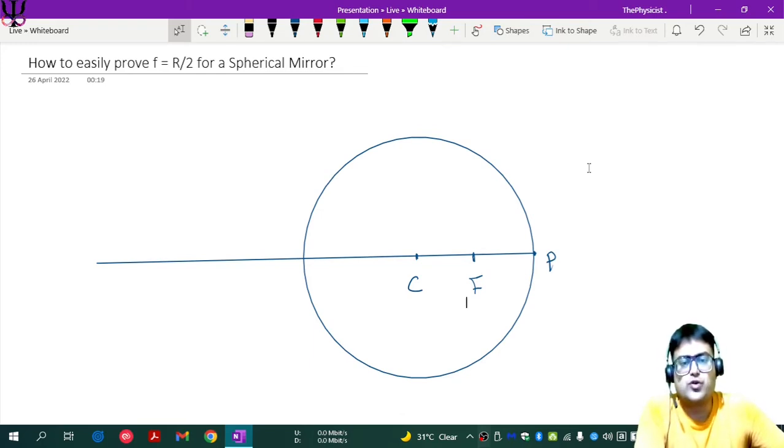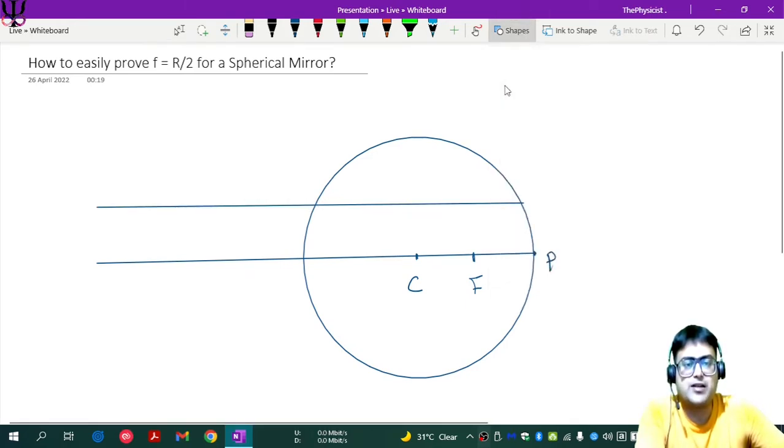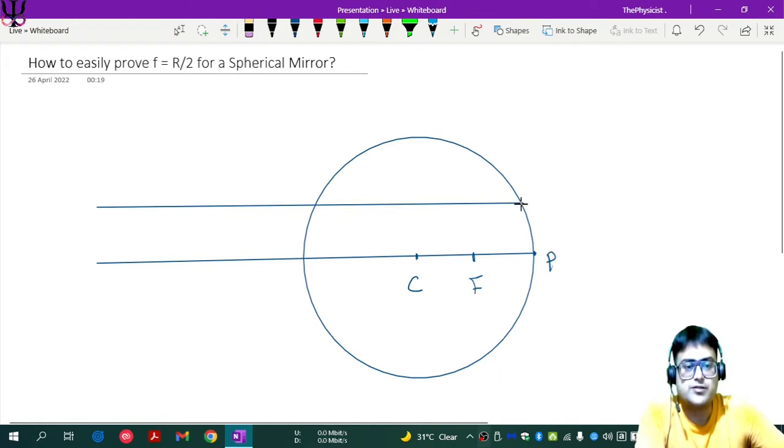Simple enough. So let us draw a parallel ray. Now this ray after reflection will pass through the focus. So let's draw it like this, it will pass through the focus.